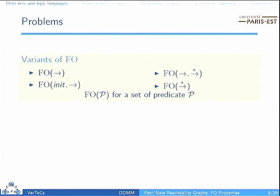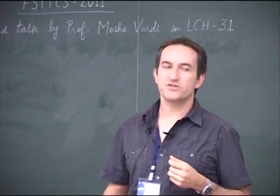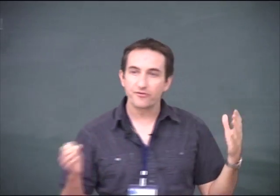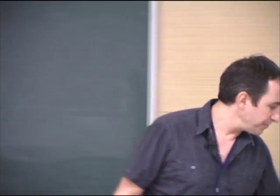In order to classify, we also try to restrict ourselves to less expressive logic. We always have the first-order language, but we may restrict to a subset of predicates — for example, only the next-step predicate, or init plus next-step, or only the iterated relation. These are the variants of first-order logic that we will use.